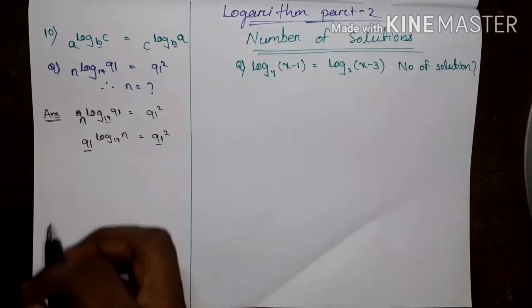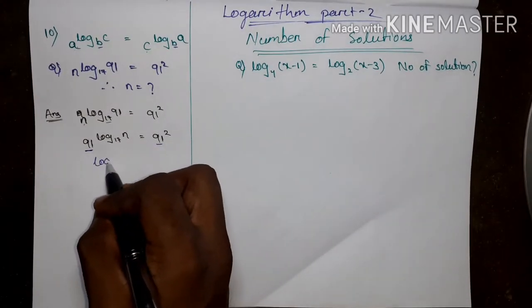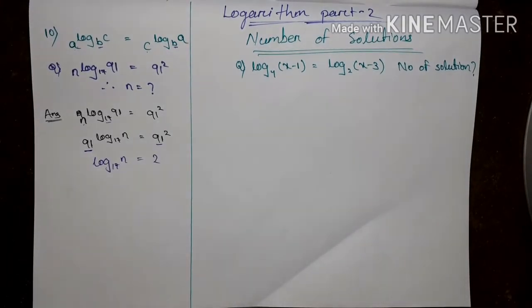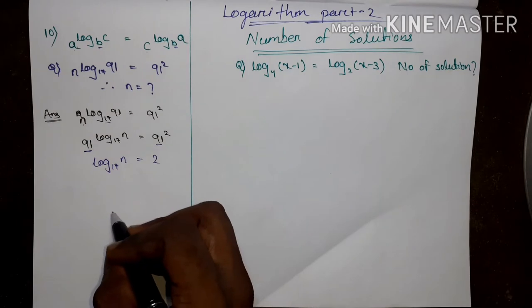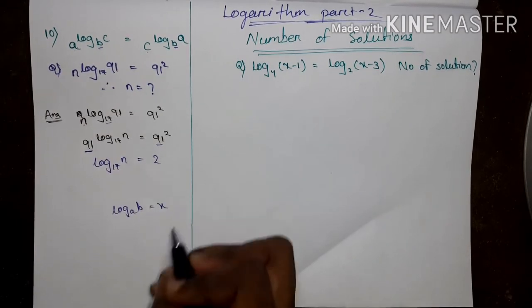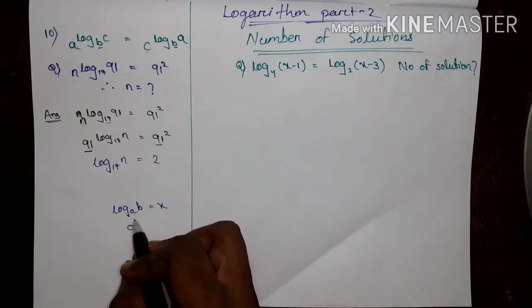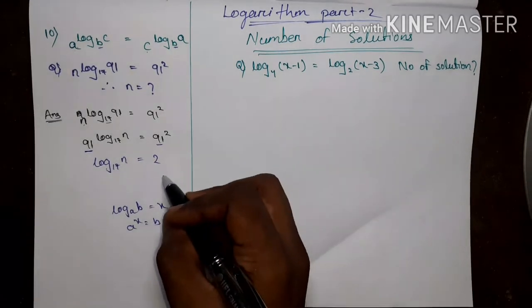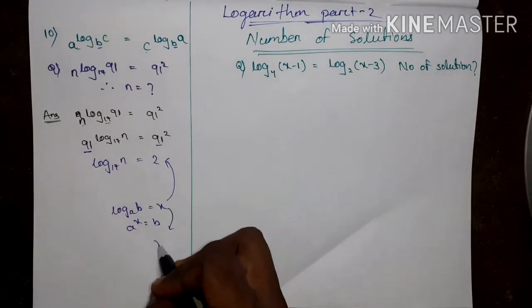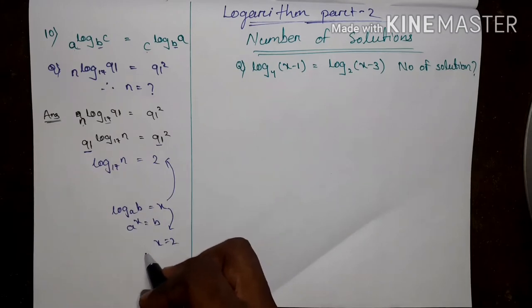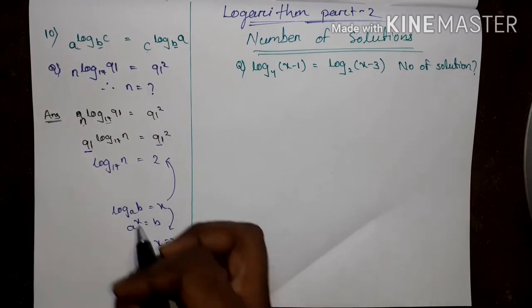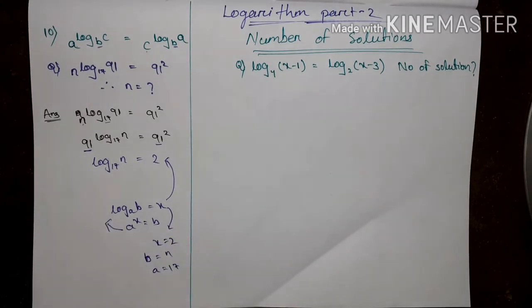Here the base is the same, so I can write log_17 n equals 2. We know log_A B equals X when A to the power X equals B. Comparing to this equation: X equals 2, B equals N, A equals 17. I can put all values into this equation.